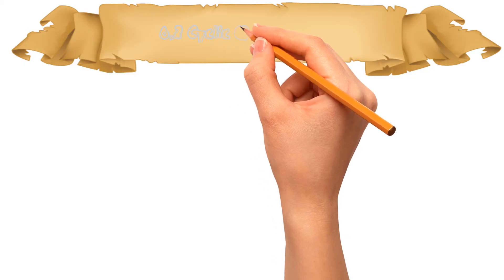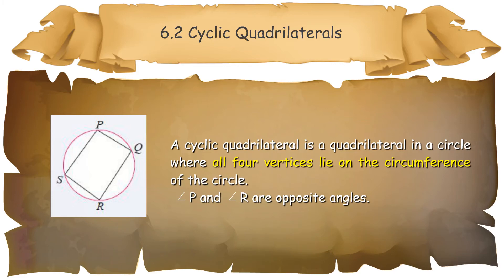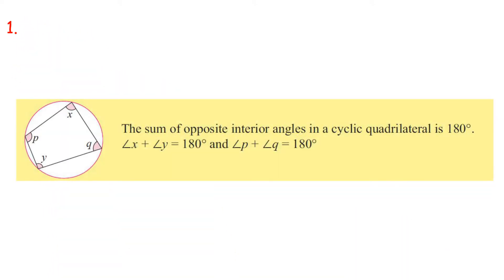6.2 Cyclic Quadrilaterals. A cyclic quadrilateral is a quadrilateral in a circle where all four vertices lie on the circumference. Angle P and Angle R are opposite angles. Property 1: The sum of opposite interior angles in a cyclic quadrilateral is 180 degrees. Angle X plus Angle Y equals 180 degrees. Angle P plus Angle Q equals 180 degrees.